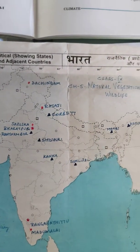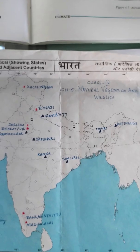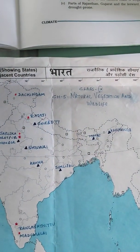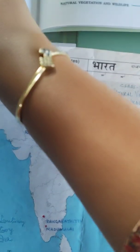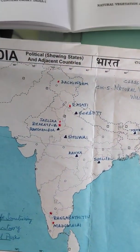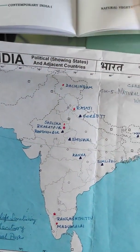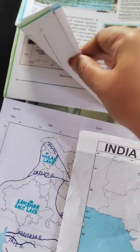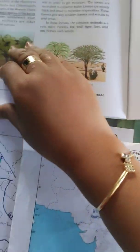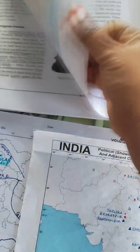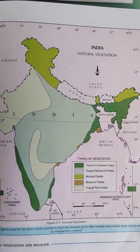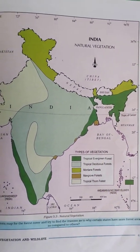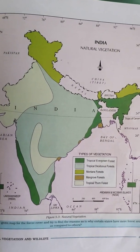Apart from the wildlife map, you have one more map on the different types of forests found in India. This map is given in your textbook at page number 45.